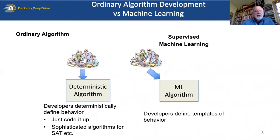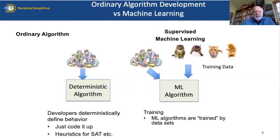When we have an ordinary algorithm, we define its behavior entirely deterministically and express that in an imperative programming language such as C, C++, or Java. When we have a machine learning algorithm—particularly supervised machine learning—we really just define a template of behavior, and then the precise behavior of the algorithm becomes defined based on data sets used for training.